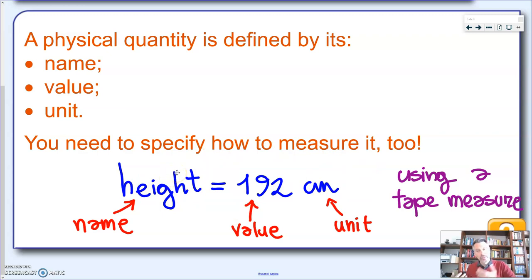So this is how I represent the physical quantity, my height. But of course, how did I get this number? For instance, I could have used a tape measure. So here we have the four elements necessary to define this physical quantity.